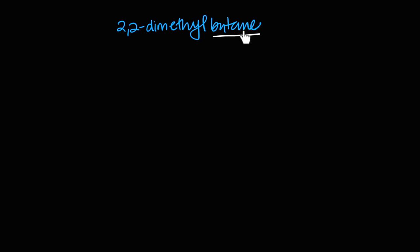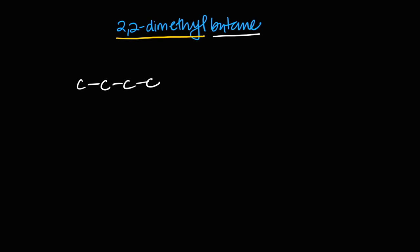Next is 2,2-dimethylbutane. The stem 'but' tells us four carbons in the main chain. 'Dimethyl' means two methyl groups, both on carbon number two. We make the main chain: one, two, three, four carbons. Carbon number two then has two methyl groups drawn on it — that's the structure of 2,2-dimethylbutane.